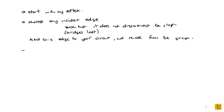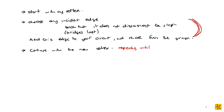Then you continue by choosing the new vertex, which is the one connected to your edge — your edge has two end vertices, and after adding the incident edge, you move to that new vertex. You repeat this process until all the edges in your graph are in the circuit.